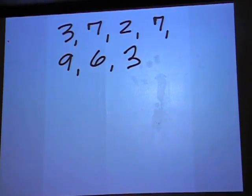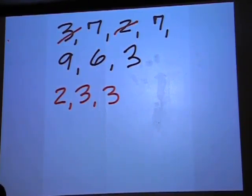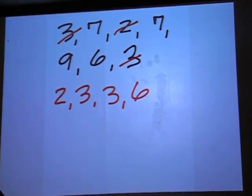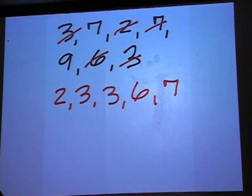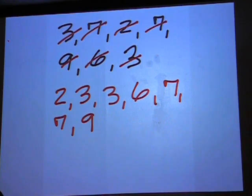All right, for median with an odd number of numbers, you still have to put them in order, like this, and we have 3, then 4, and then 5, then 6, and 7. So we have 7 numbers.